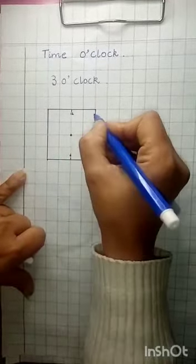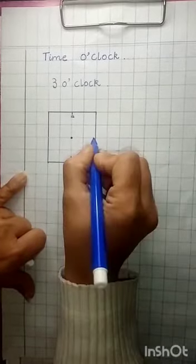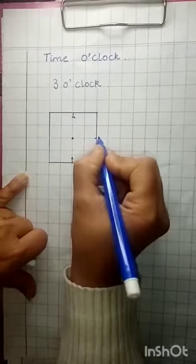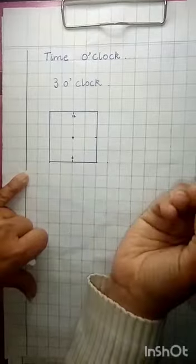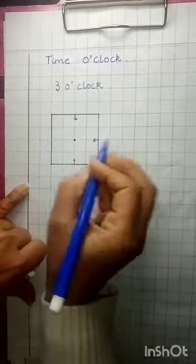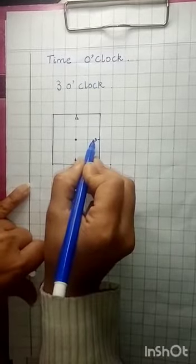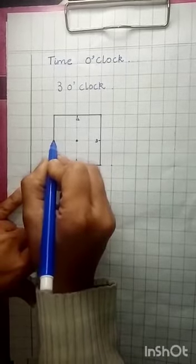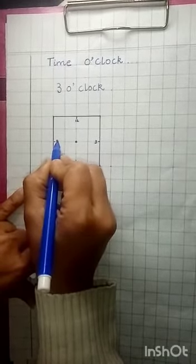Now here from this side you will leave 1, 2 blocks. And here you will make one line and write 3 over here. And in front of the 3 here you will write 9.